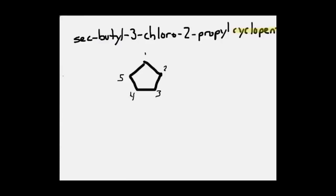Sec-butyl group, branched alkyl group—it's a butyl chain. At carbon 2 is a straight-chained propyl group, 3 carbons long. At position 3 is my chlorine. Nothing else mentioned in this name, so this would be the appropriate structure.